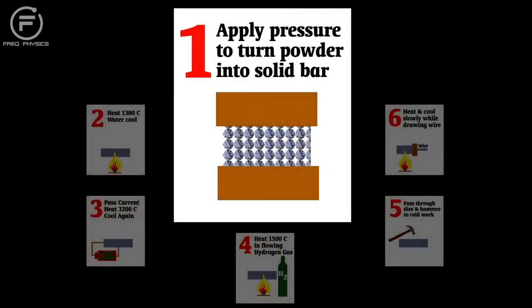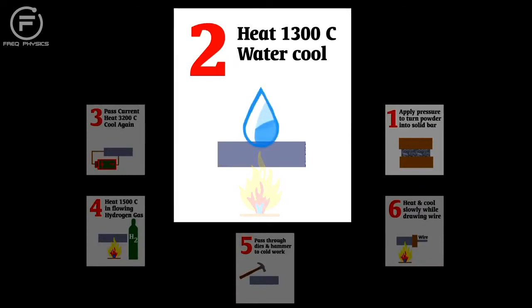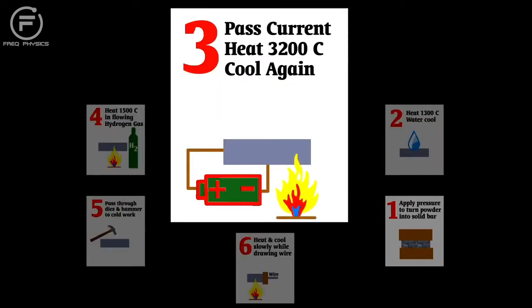Just to give you an idea of the difficulty, here's an abbreviated list of the steps. One, apply great pressure to turn tungsten powder into a fragile bar. Two, heat it to thirteen hundred degrees Celsius and then cool it with water. Three, pass a current through the tungsten while heating it to thirty two hundred degrees Celsius and then cool again.